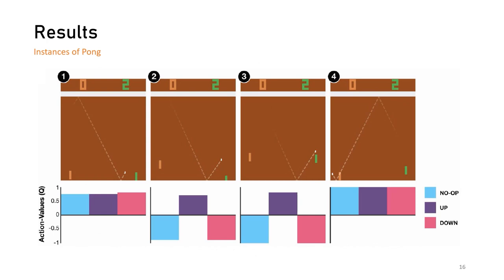Here is another example of the game Pong. In position 1, all three actions show similar values. However, as the ball comes down near the bat, the up action gets the most value in position 2 and 3. Immediately before scoring a point, all three actions again have the highest value indicating an upcoming reward.